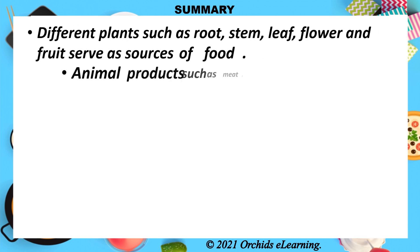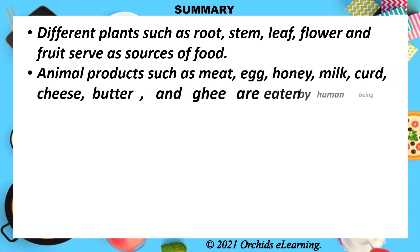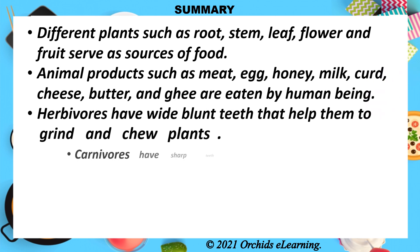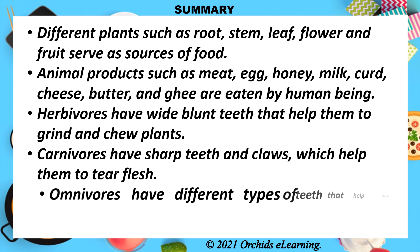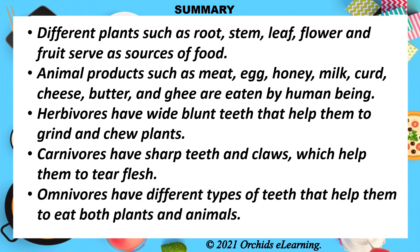To summarize: different plant parts such as root, stem, leaf, flower, and fruit serve as sources of food. Animal products such as meat, egg, honey, milk, curd, cheese, butter, and ghee are eaten by human beings. Herbivores have wide, blunt teeth that help them grind and chew plants. Carnivores have sharp teeth and claws to tear flesh. Omnivores have different types of teeth that help them eat both plants and animals.